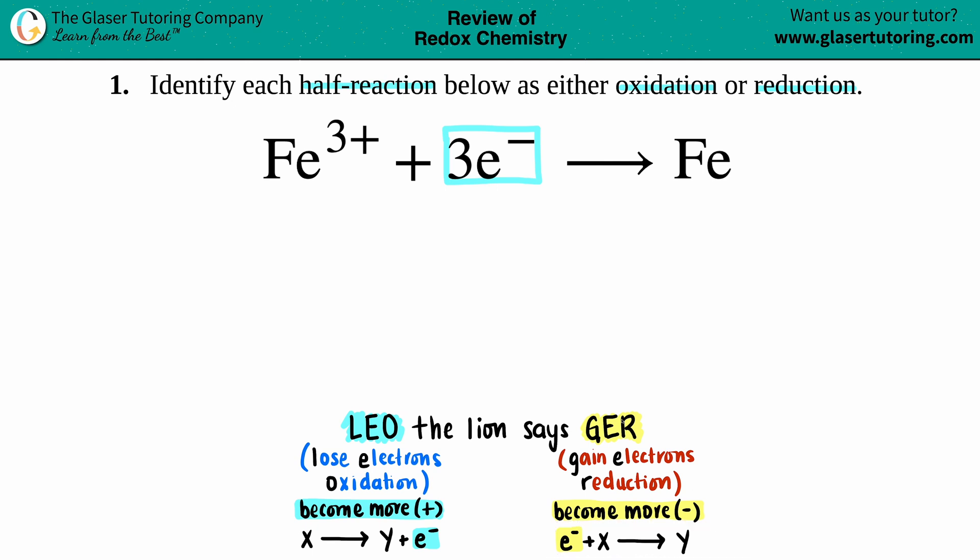So whenever you have electrons on the left hand side, that's always reduction - that's the GER part. Anytime you see electrons on the right hand side, that means you lost them and that's oxidation. Since these electrons are on the left hand side, this would be reduction.